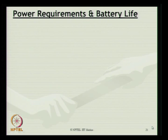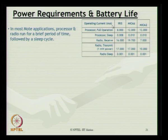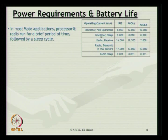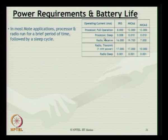Looking at the power requirements and battery life for these facilities, in most mote applications the processor and radio run for a brief period followed by a sleep cycle. The mote does not work continuously — it goes into a sleep cycle. The processor in full operation requires 8 mA in the IRIS configuration and 12 mA in MicaZ and Mica2. In sleep mode, the processor consumes only 0.008 mA. The radio receiver uses about 16 mA in IRIS mode, and approximately 19.7 mA and 7 mA in Mica models respectively, whereas in sleep mode power consumption is only about 0.001 mA.